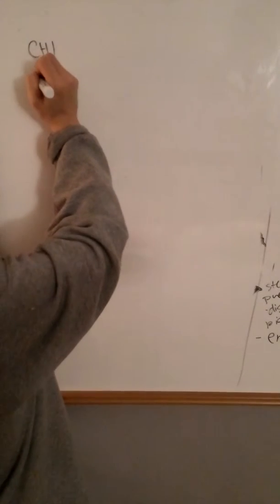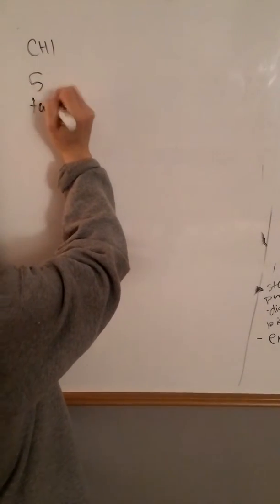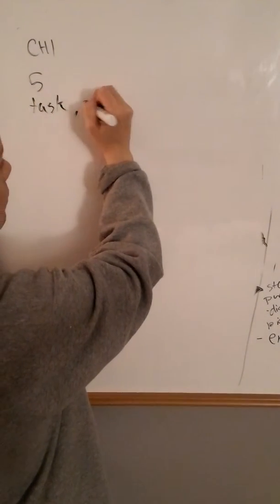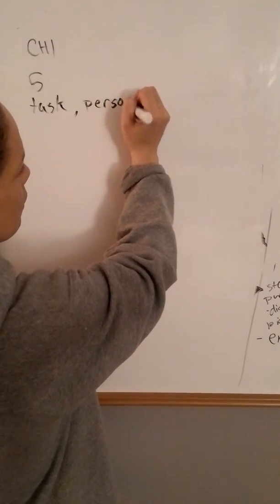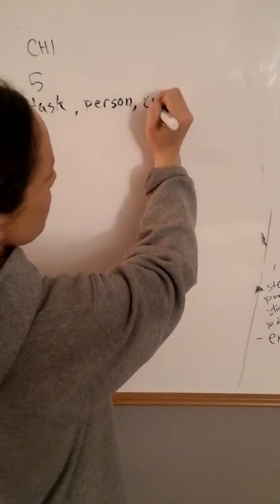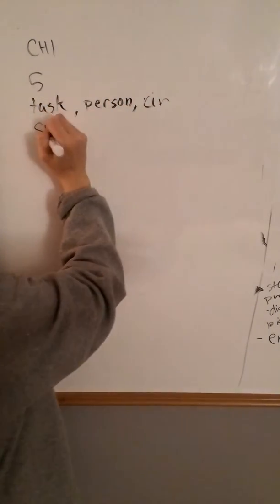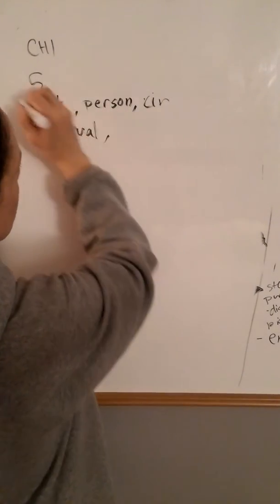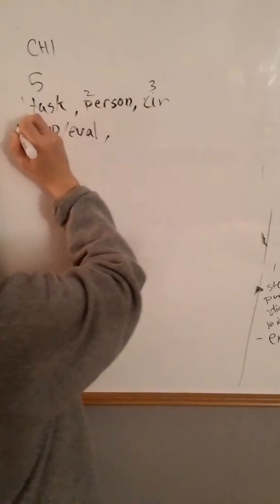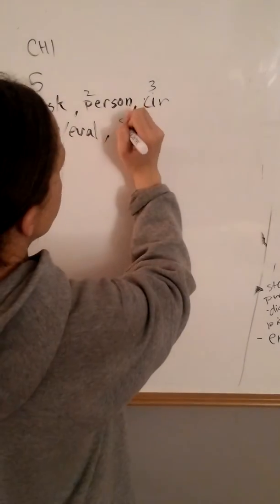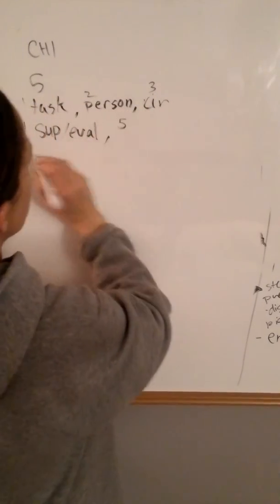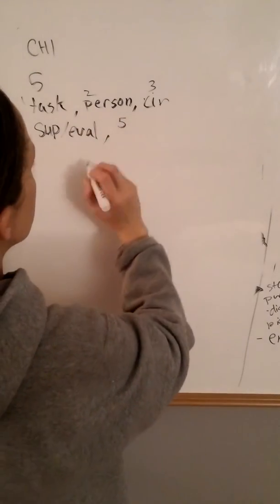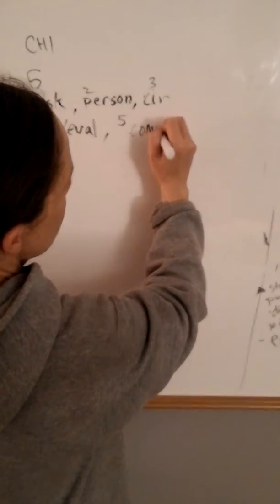All right, five rights of delegation. They consist of the right task, right person, right circumstance, right supervision or evaluation. That's one, two, three, four. And then supervision, evaluation, task, person, circumstance, and communication or direction.